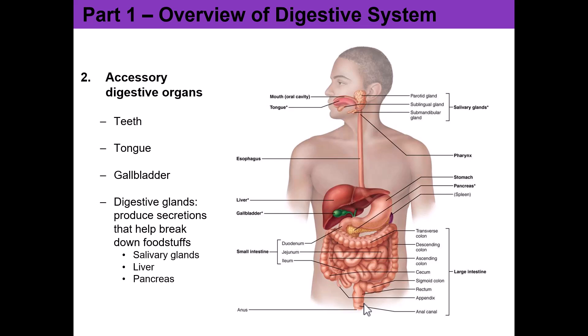You need your teeth and your tongue if you're going to be able to chew and swallow. If you don't have those, there are other ways to get food into the digestive tract. The other accessory organs — food does not pass through them, but you need them to provide other things to allow those digestive processes to occur.